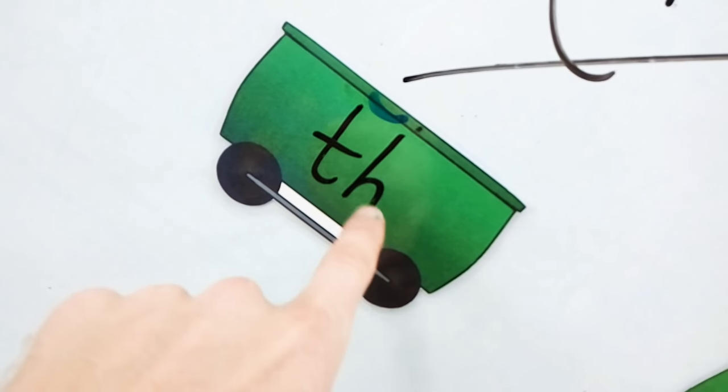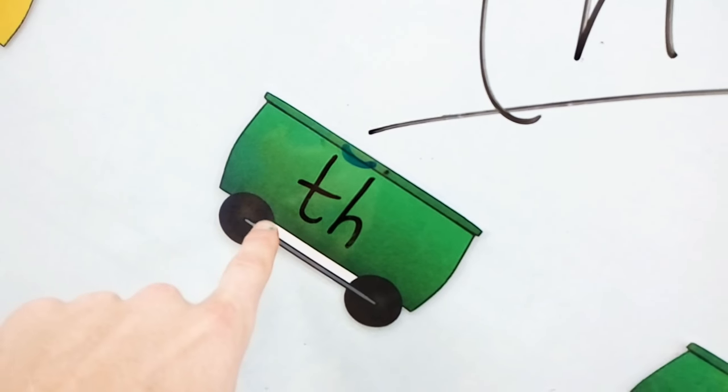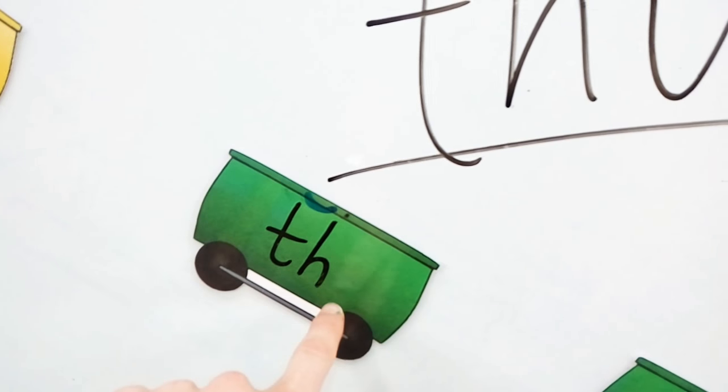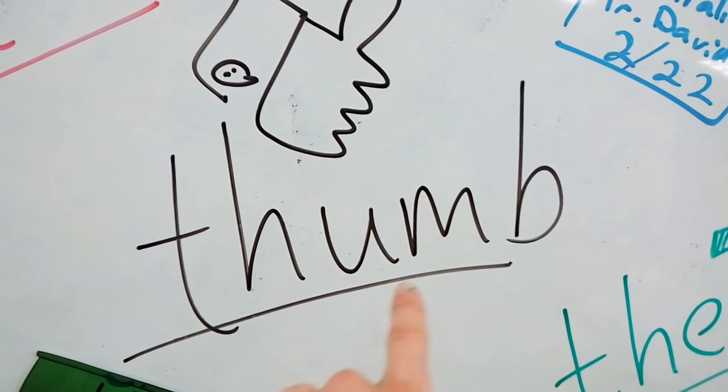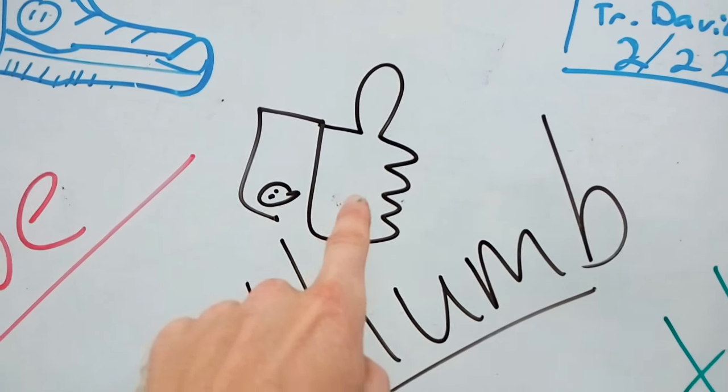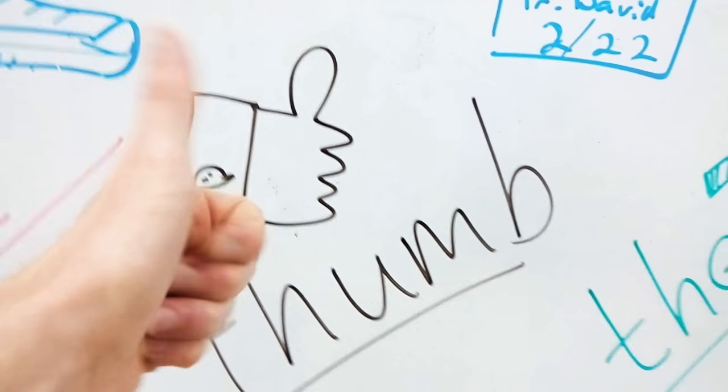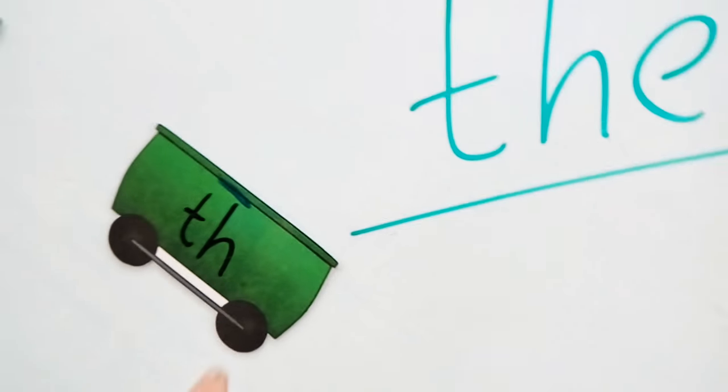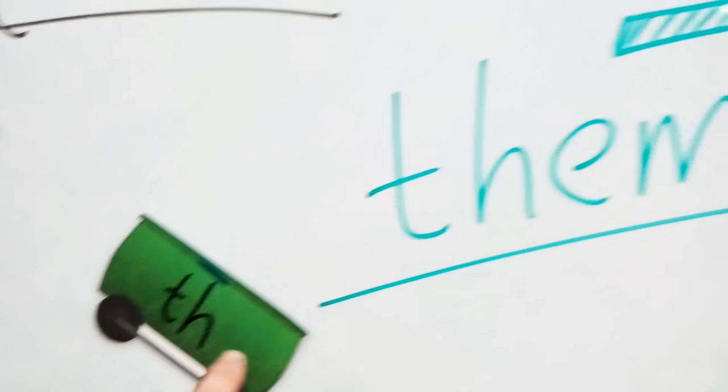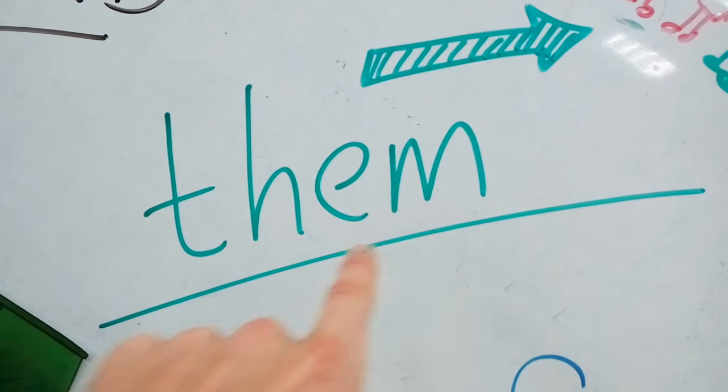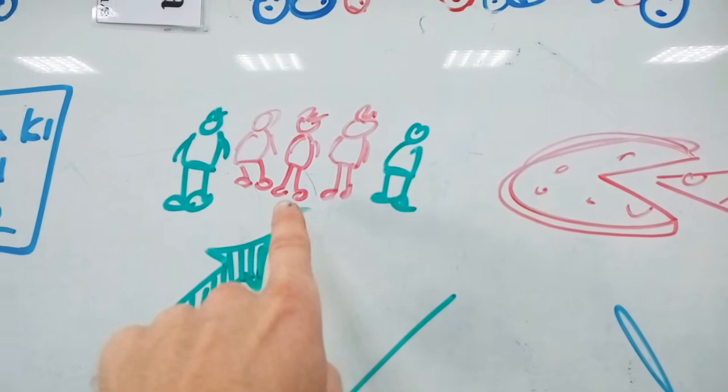TH can say th, thumb - one thumb up. TH can say th, them - I like them.